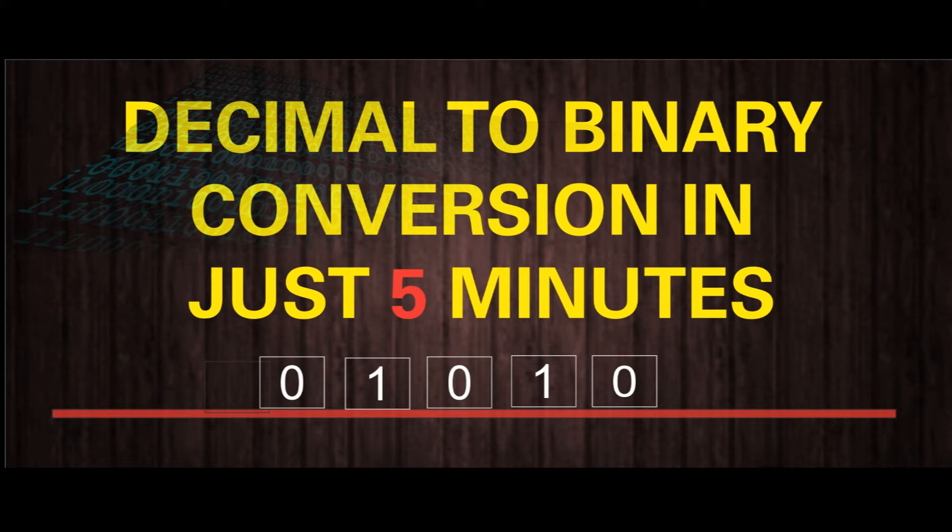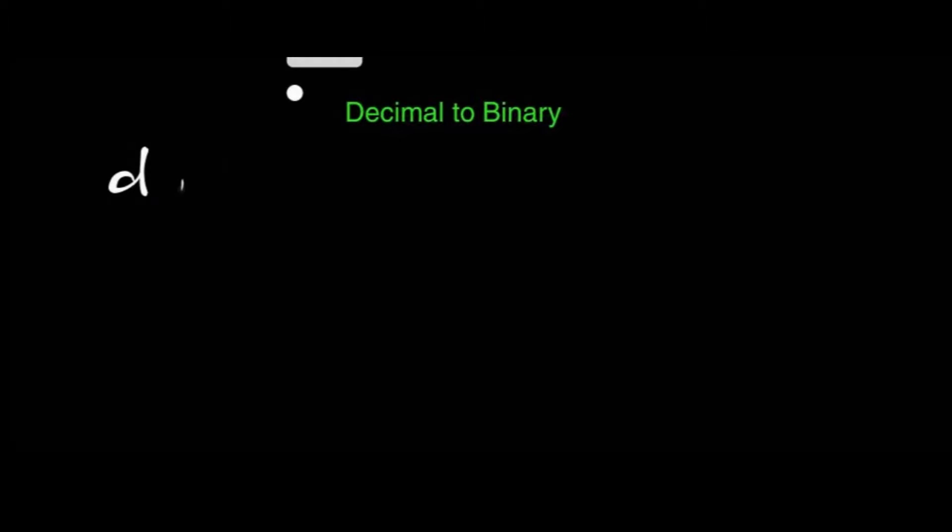The numbers we use in our day-to-day life for all mathematical calculations and transactions are part of the decimal number system. So what is the specialty of our number system? It is made up of 10 basic symbols.